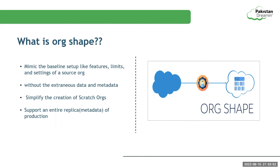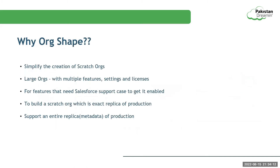Org shape allows you to create a scratch org on the basis of production org settings, such as enabled features, but not the code, triggers, etc. Org shape simplifies the process of scratch org creation — manual configuration activities are not needed anymore, as the org shape mimics everything from the source. You might be thinking: we already have a features option available in the configuration file, so what is the need of org shape?